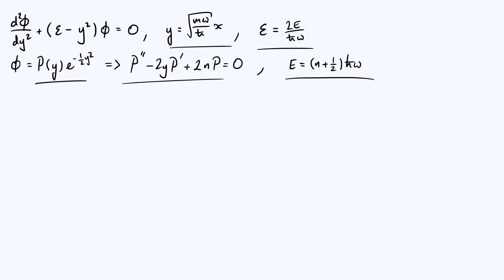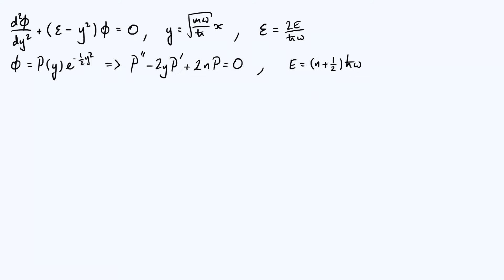Omega is a parameter that appears in the potential energy function itself. We had V as half m omega squared x squared — that was the quadratic potential we started with. In the last video, we solved the differential equation for p using a power series, so we have sort of solved that.